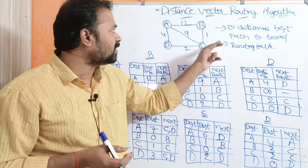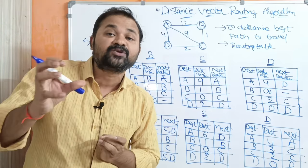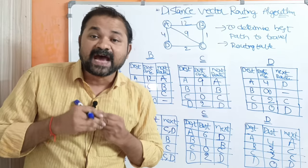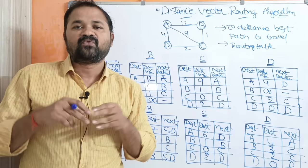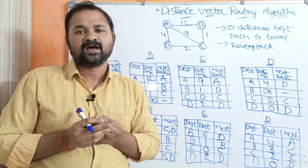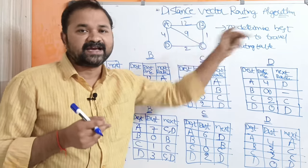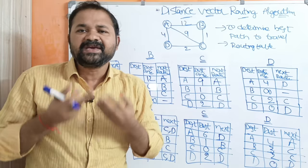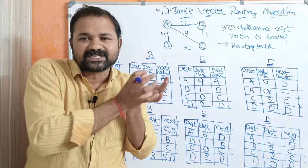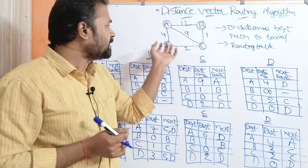That is why we can call distance vector routing algorithm a dynamic routing algorithm. It can also be called an adaptive routing algorithm, because every time the routing table information changes. Or, we can call this an iterative routing algorithm. Iterative means we have to follow several steps until the least cost routing is formed.